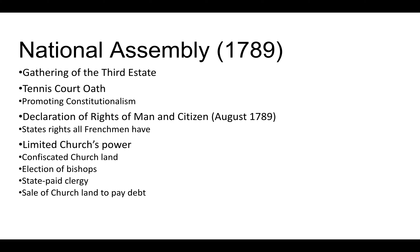The Storming of the Bastille becomes the marker for the beginning of the French Revolution, much like in America the first shots at Lexington and Concord are known as the beginnings of the war even though there was political stuff happening beforehand. The National Assembly becomes very powerful and the King, Louis XVI, is forced to accept the National Assembly as a representative body and accept some of the reforms they want.